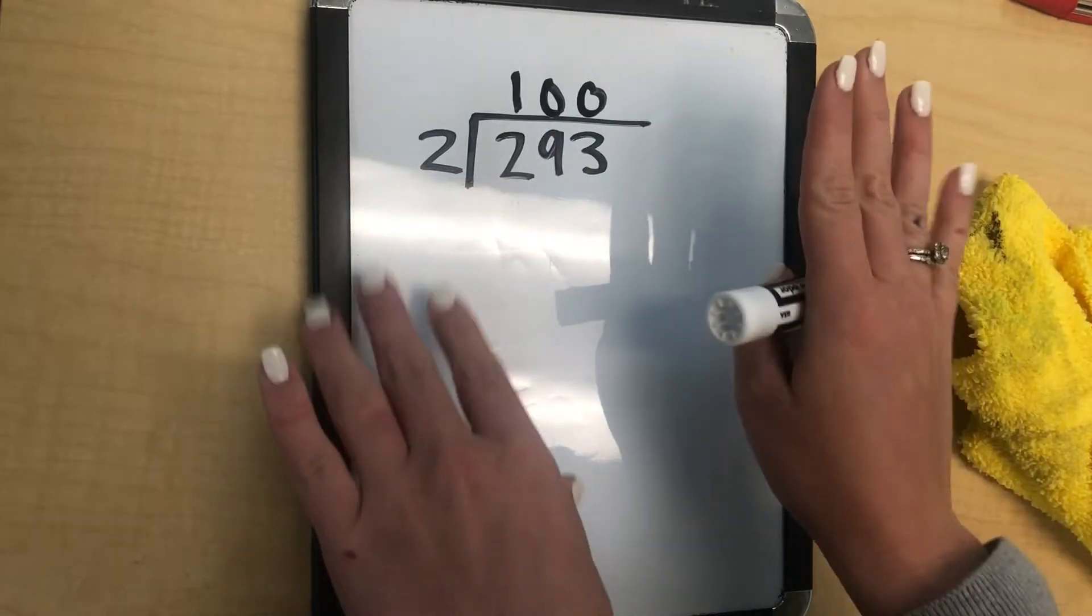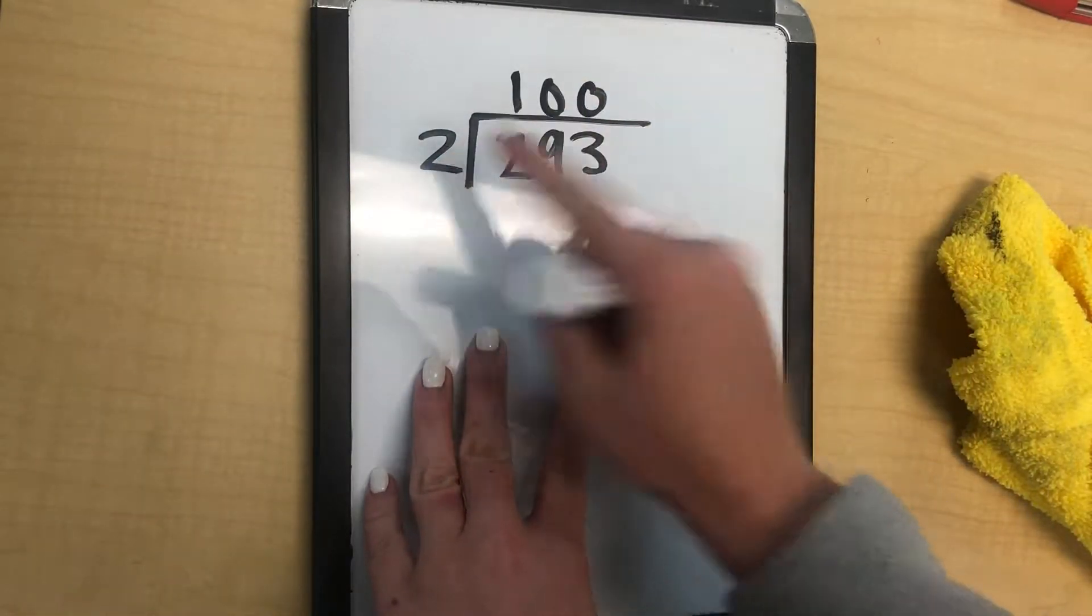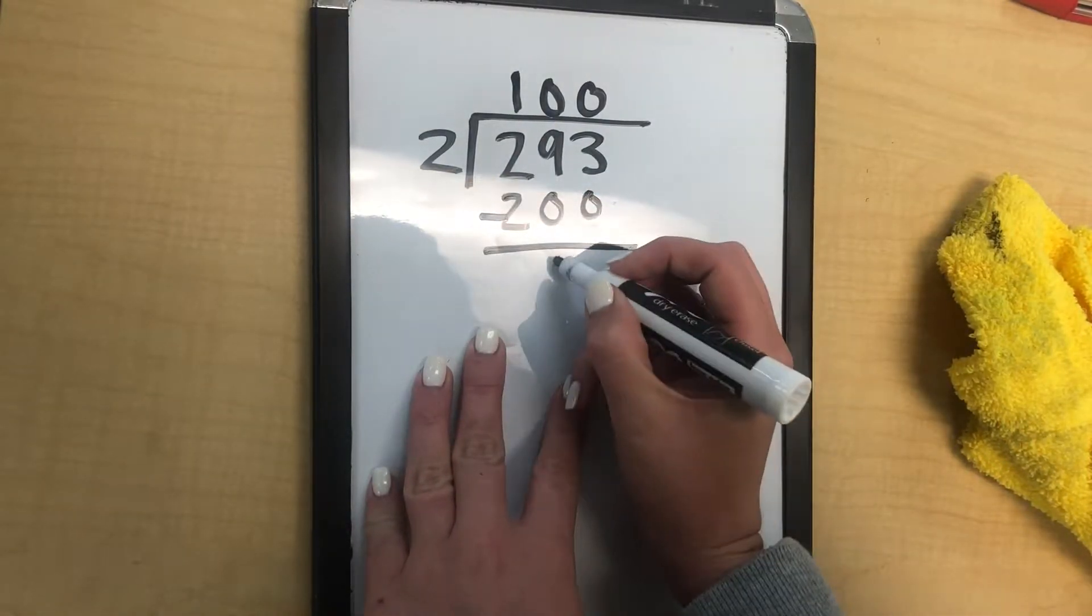So then we do, the only difference is how it looks up here. So then we go ahead and we multiply, 100 times 2 is 200. We subtract, we get 93.